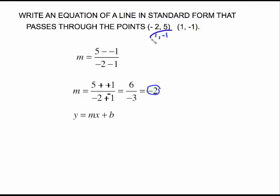There's our m. There's the point I'm going to use, plugging in negative 1 for y. m is negative 2. x is 1 plus b. Negative 1 equals negative 2 plus b. Add 2 to both sides. And we have b equals 1.